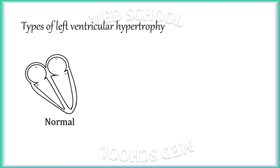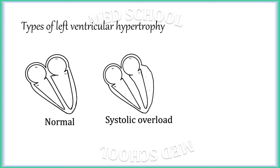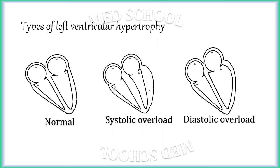There are two types of left ventricular hypertrophy. LVH due to systolic overload occurs when the left ventricle has to pump against high resistance during systole — examples include systemic hypertension, aortic stenosis, coarctation of the aorta, etc. LVH due to diastolic overload occurs when the left ventricle is filled with an excessive amount of blood during diastole — examples include aortic valve incompetence, mitral valve incompetence, severe anemia, etc.